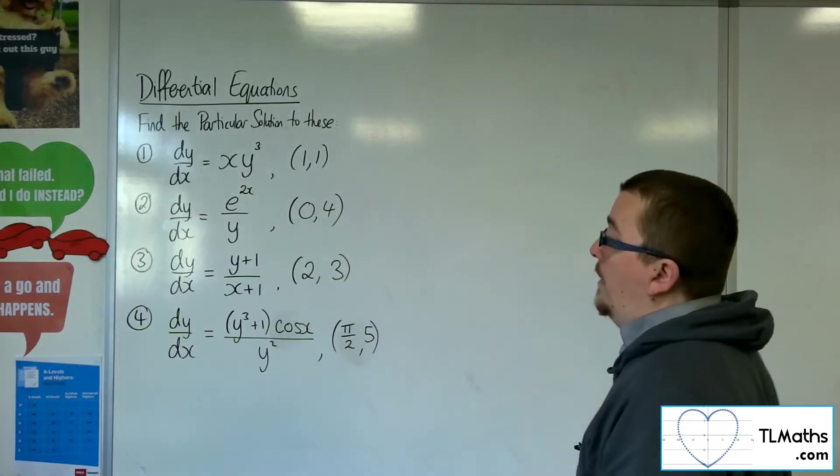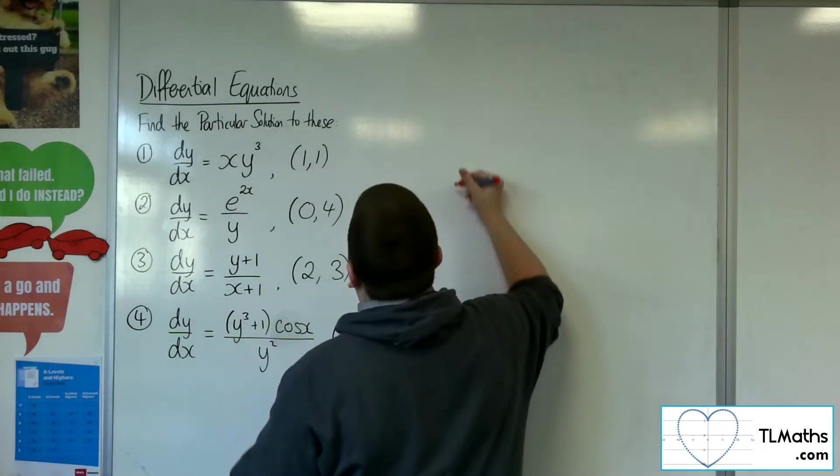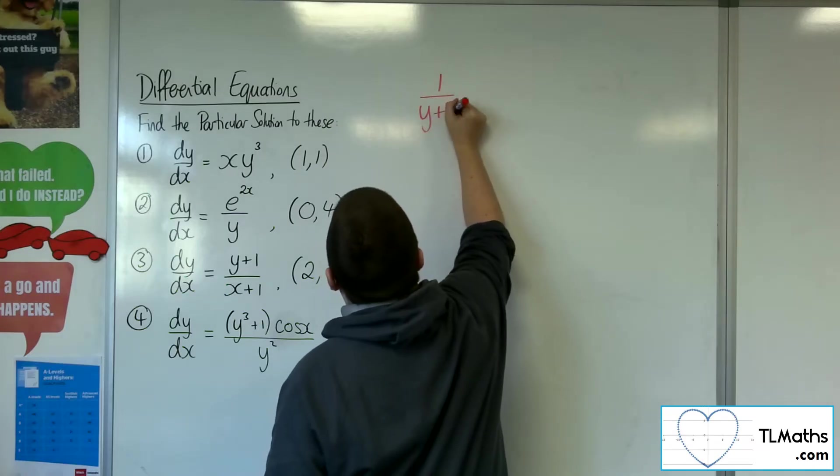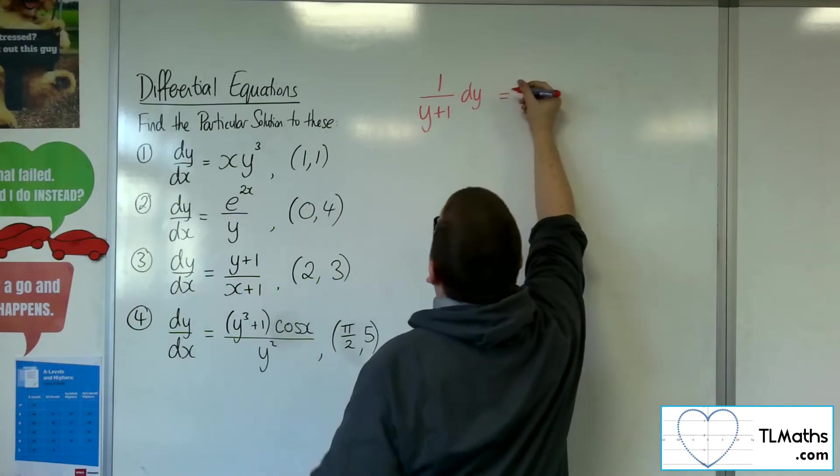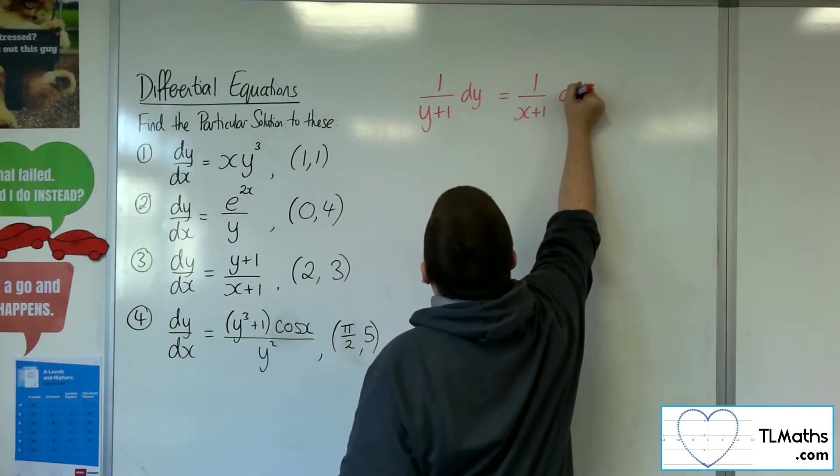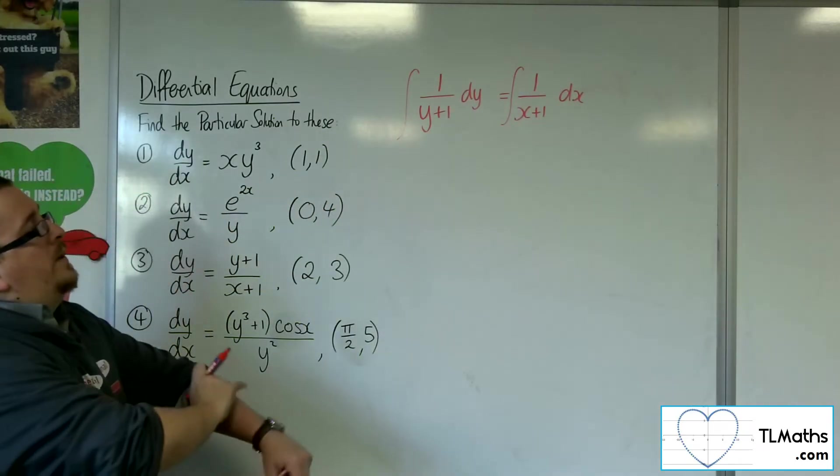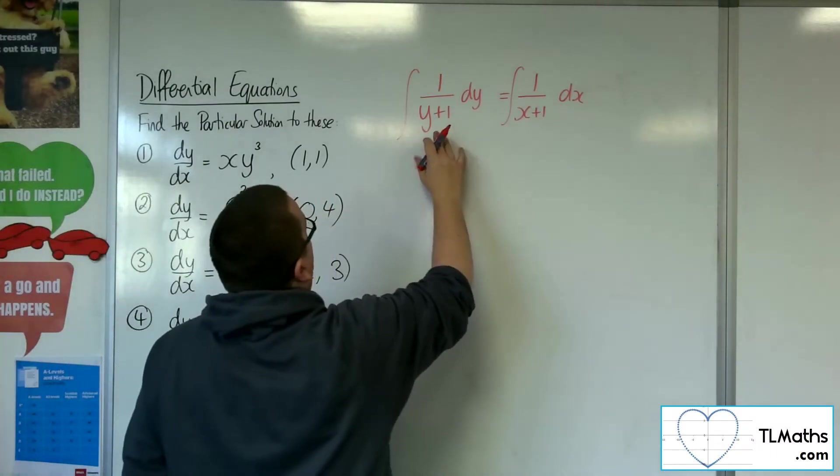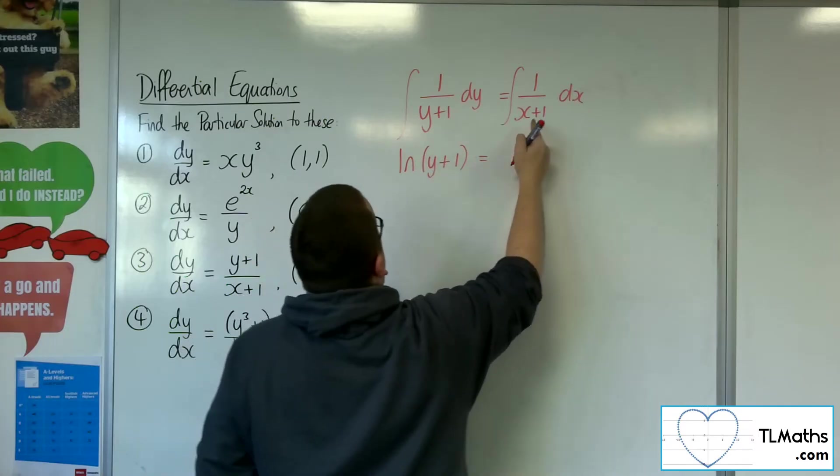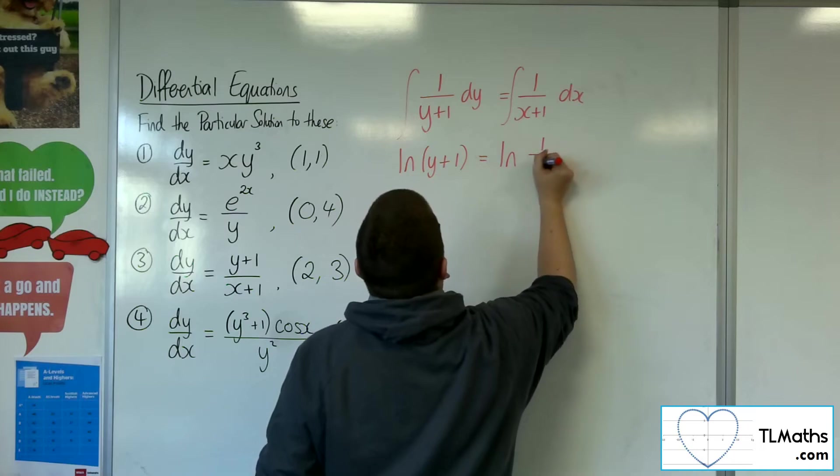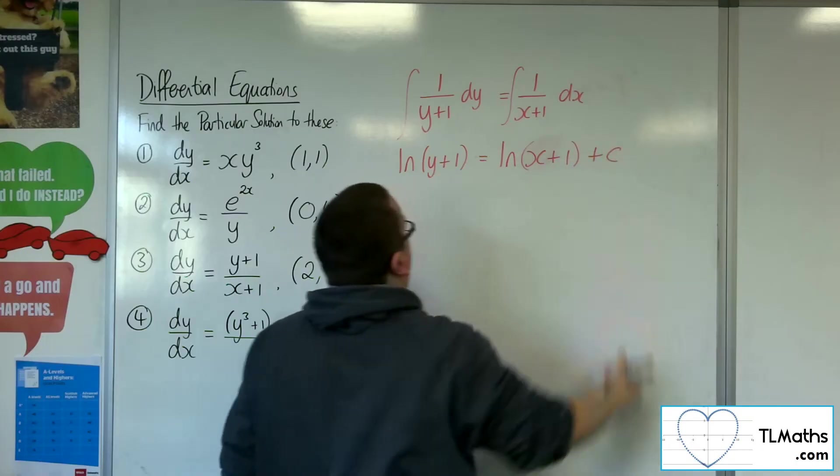Question number 3. dy/dx equals y plus 1 over x plus 1. If I divide both sides by the y plus 1, the dy stays where it is, and I can multiply both sides by the dx. And then I want to integrate both sides. 1 over y plus 1 will integrate to log of y plus 1. And the 1 over x plus 1 will integrate to log of x plus 1 plus c, the constant of integration.